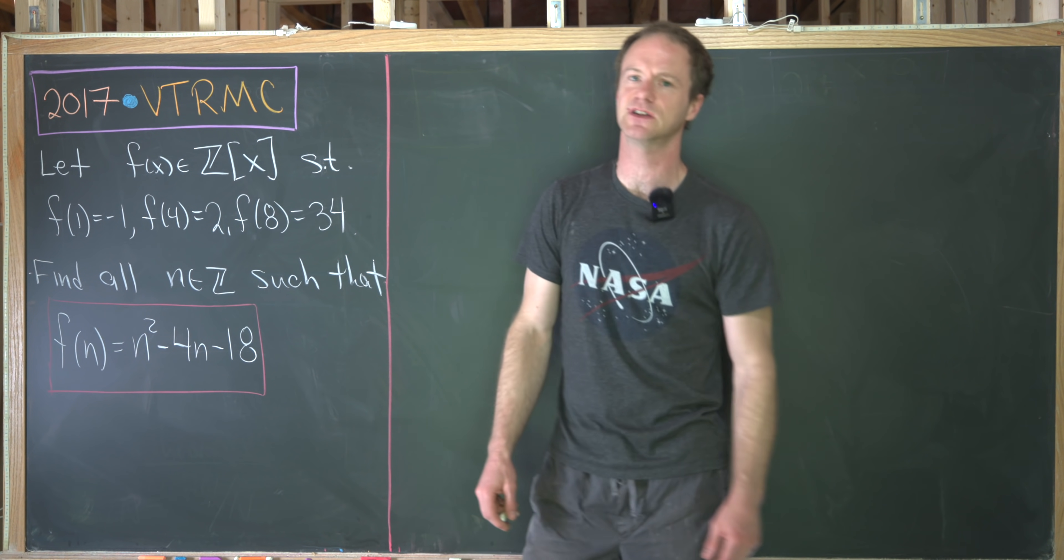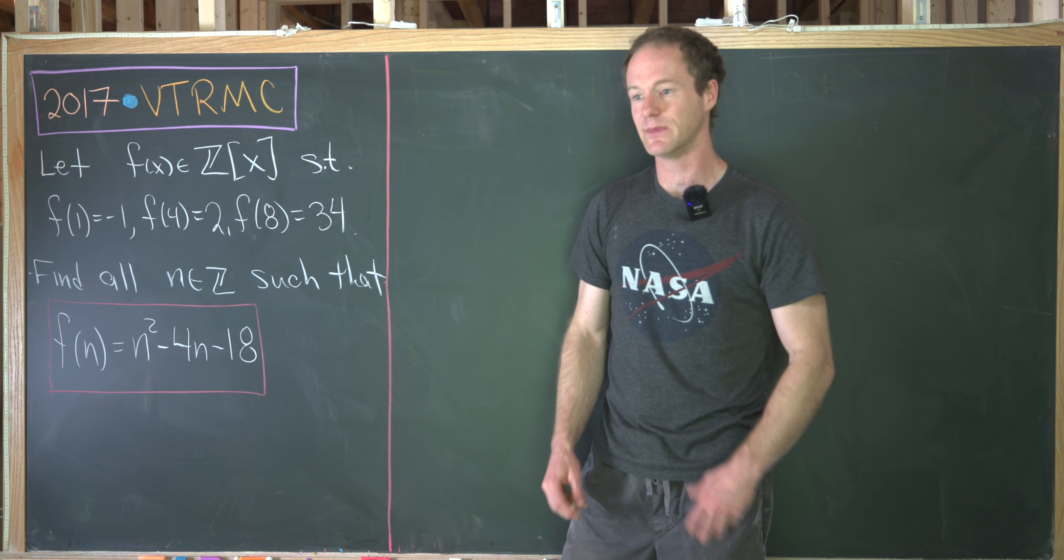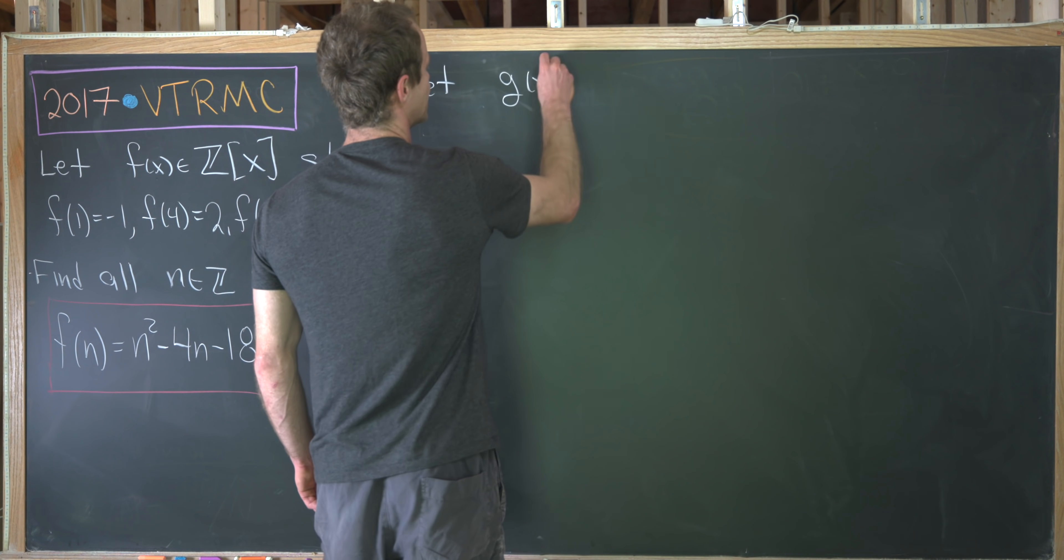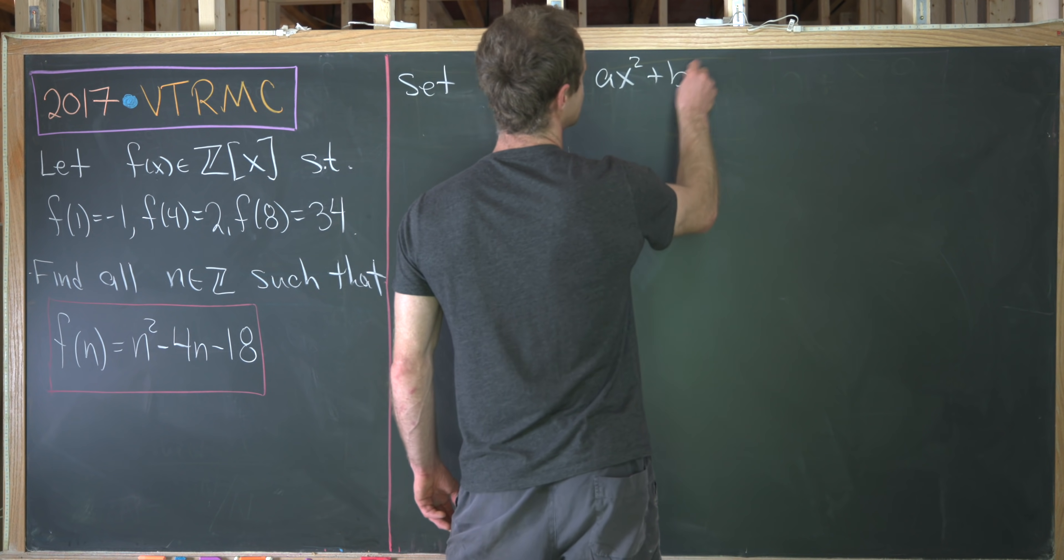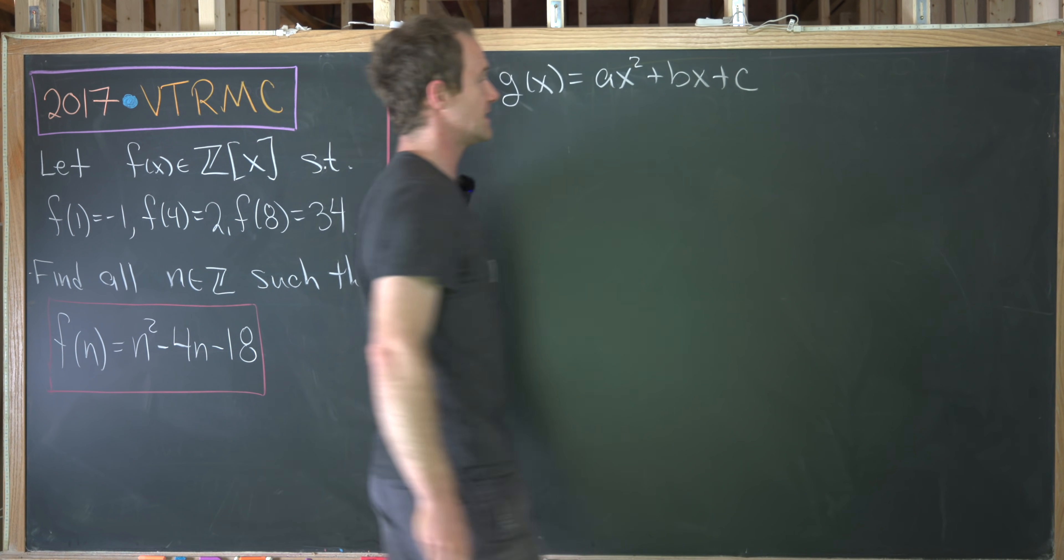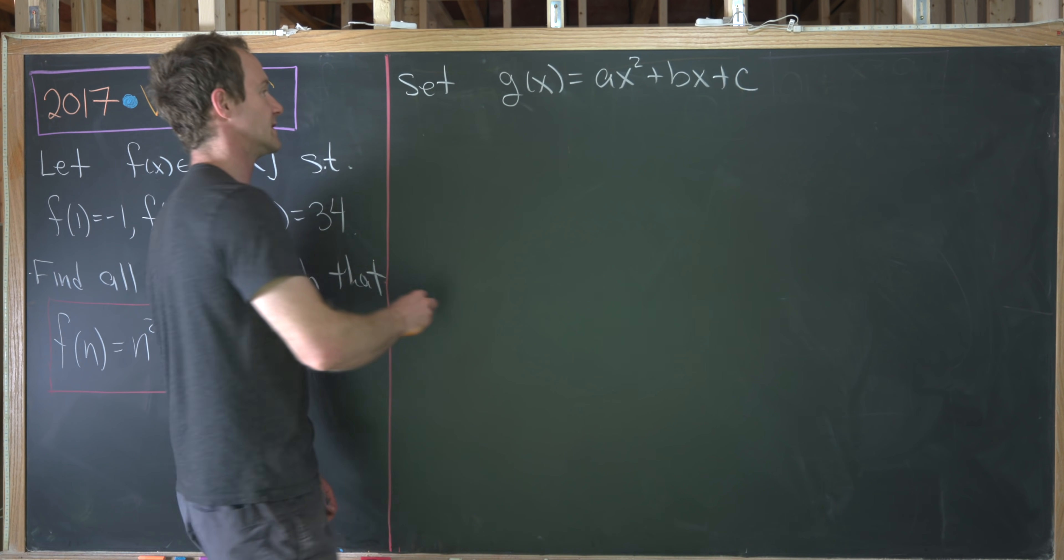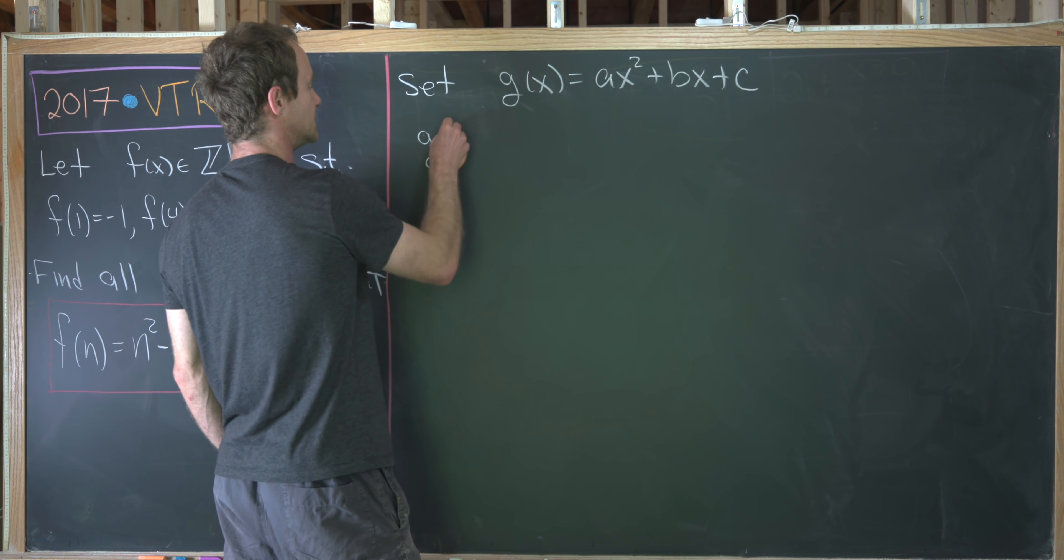We're not totally guaranteed for it to be in Z[x], but as we'll see, it will be. So let's set g of x equal to ax squared plus bx plus c, where a, b, and c are yet to be determined. And then let's impose these conditions.